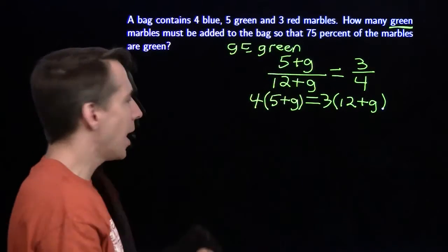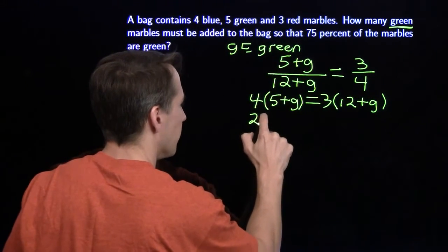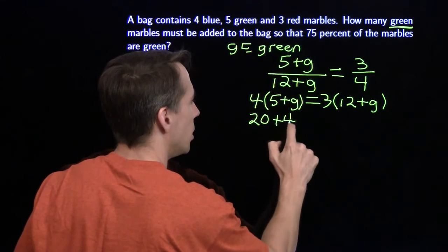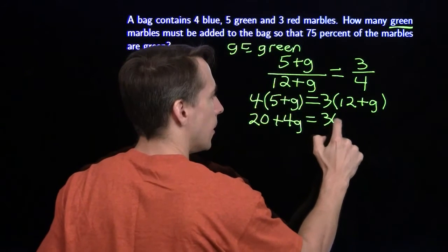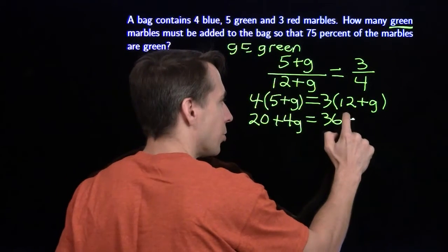That'll give me 4 times 5 plus G equals 3 times 12 plus G. Now, we're just going to expand both sides here. 4 times 5 is 20 plus 4G. And over here, we have 3 times 12 is 36 plus 3G.